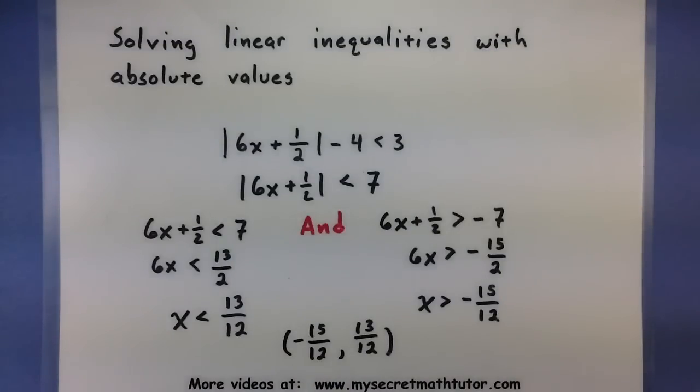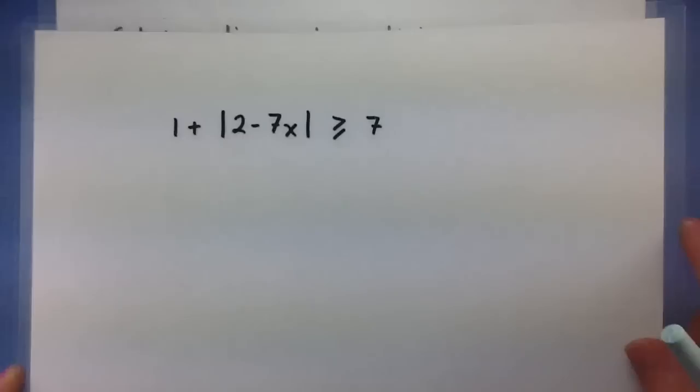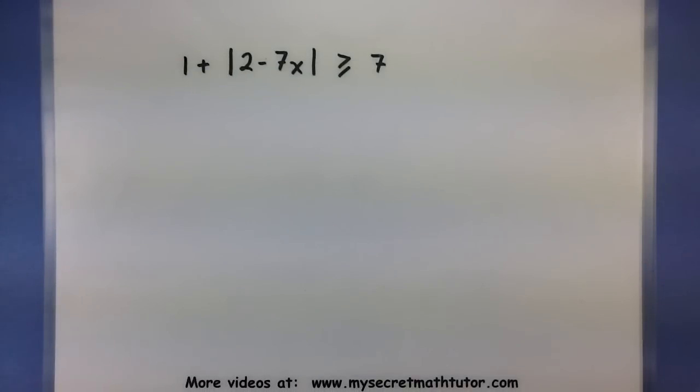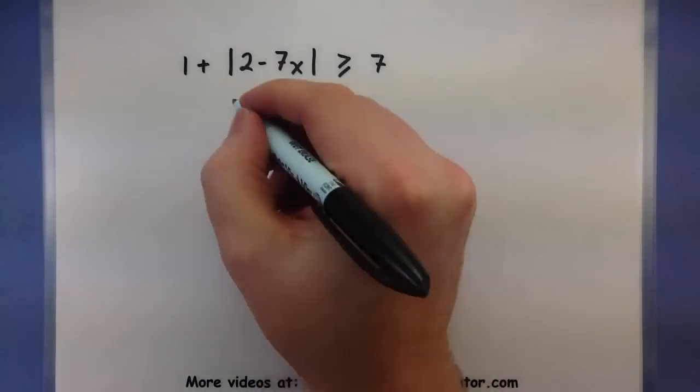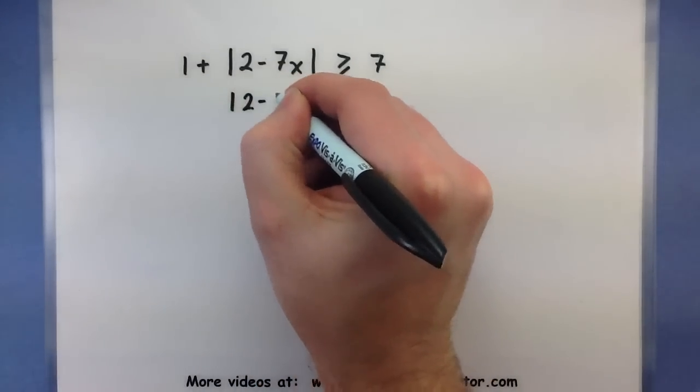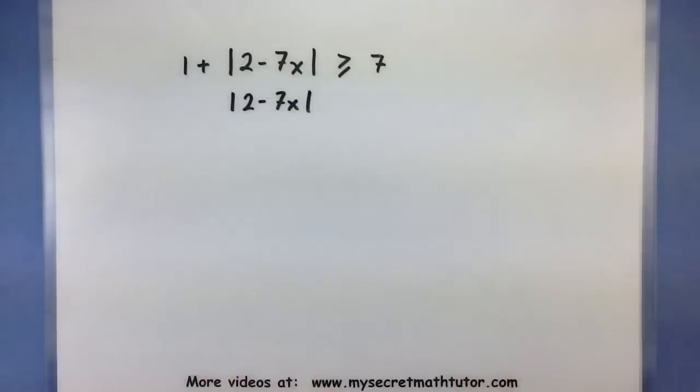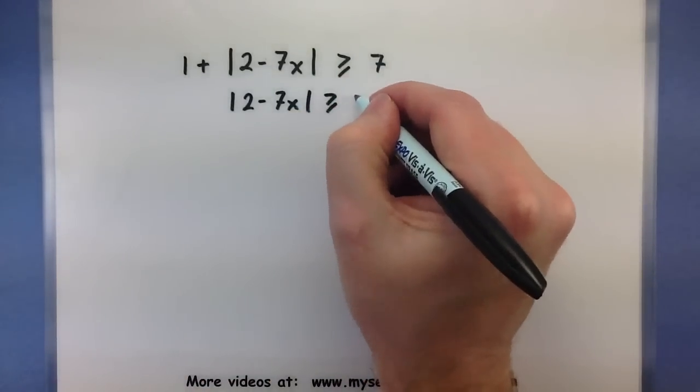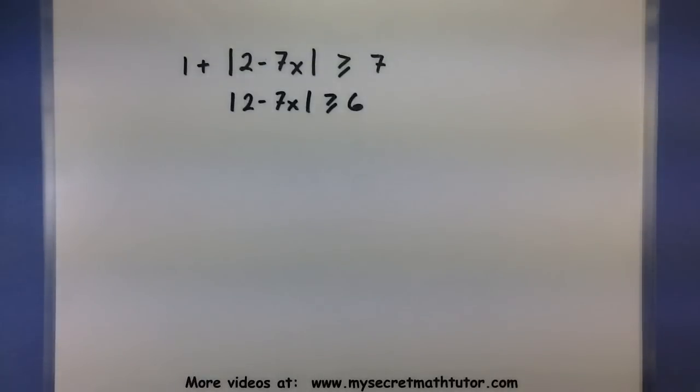Let's do another example and see if we can connect things using OR. Alright, so I have 1 plus the absolute value of 2 minus 7x is greater than or equal to 7. Again, we'll start off by trying to isolate that absolute value. So absolute value 2 minus 7x minus 1 would give us a 6. Okay, it looks pretty good.